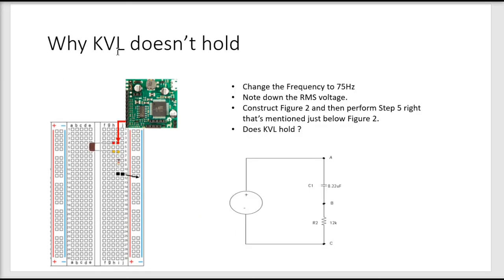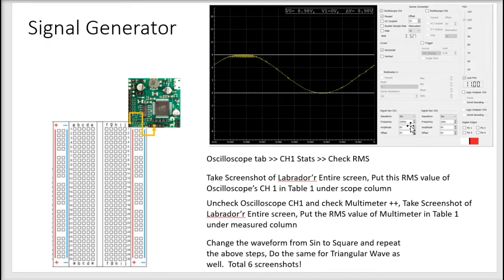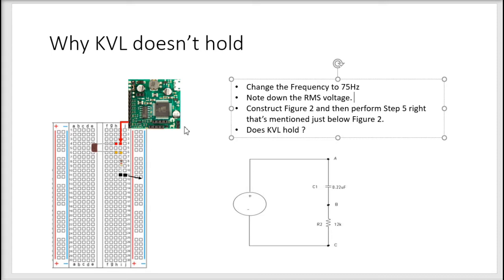Now in the second part of the lab, we are going to see the effect of KVL when you have an AC voltage source. First, in the Labrador screen, change the frequency from 100 Hz to 75 Hz and note down the RMS voltage. Then you have to construct this circuit — a capacitor and a resistor in series — where signal generator DC channel 1 goes as input to the capacitor, and the ground is already shorted when the Labrador is placed on the breadboard.